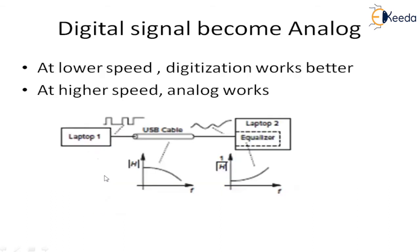Let us take another example. Here there are two laptops — laptop 1 and laptop 2 — which are connected by a USB cable. Laptop 1 is sending digital data to laptop 2 through this USB cable. This USB cable has a finite bandwidth of 100 MB per second, so it attenuates and distorts the data at higher frequencies. So we need an equalizer — an equalizer that operates in the analog domain — which regains this distorted data. This equalizer amplifies the data at higher frequencies and is again working in the analog domain.